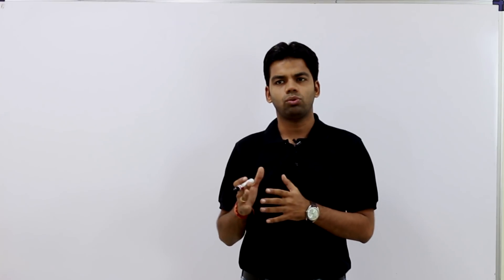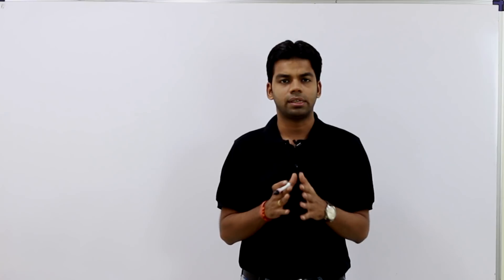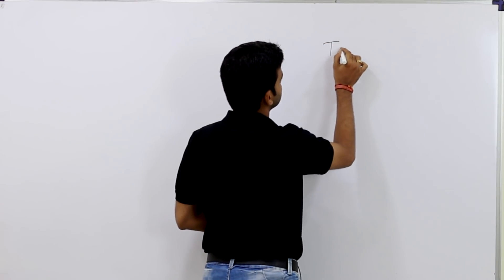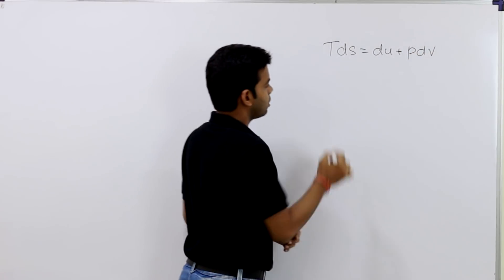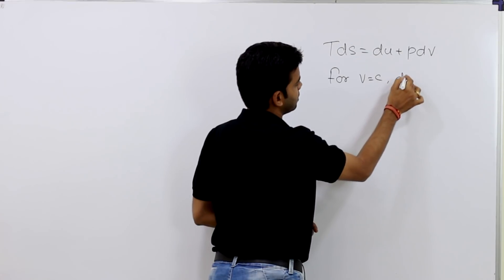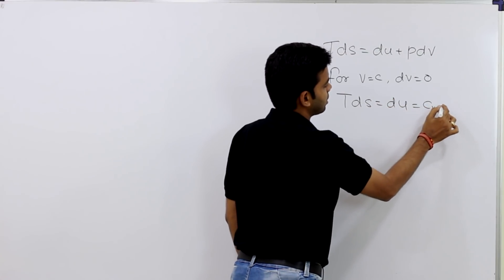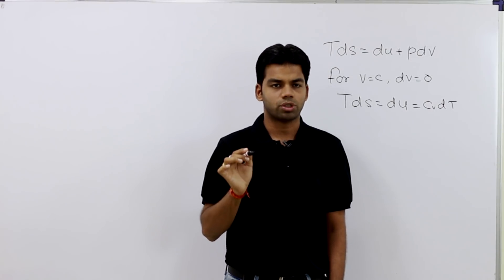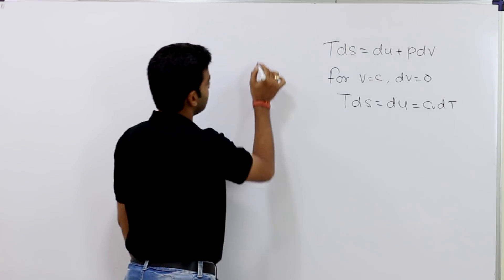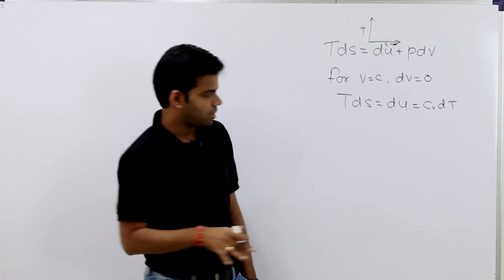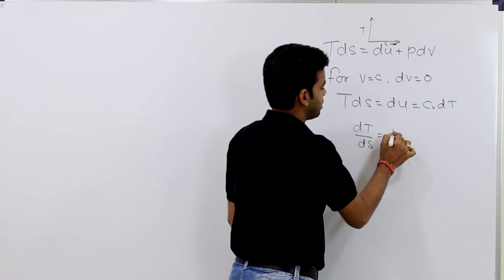Before actually solving this question, I will tell you how the slope of constant volume and constant pressure curves look in a TS diagram. We know the relation: Tds = du + pdv. For a constant volume process, dv = 0, so Tds = du = Cv dT. The slope dT/dS in the TS diagram equals T/Cv.